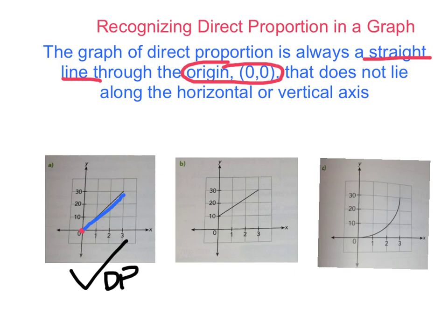Now for B, we see that it is a straight line. And that works for the first part of the definition. But our second part, the origin, which is located here at 0, 0. It is not, the line is not going through 0, 0. So this is not a direct proportion. Not direct proportion.